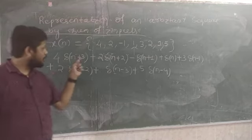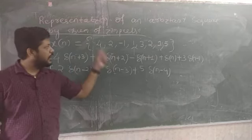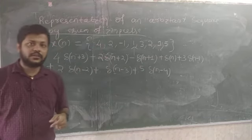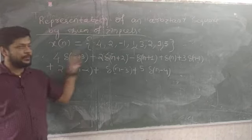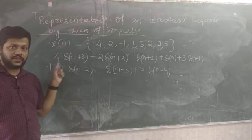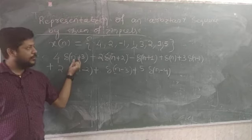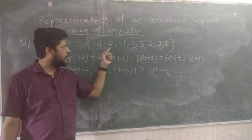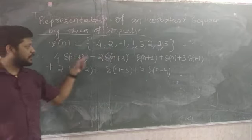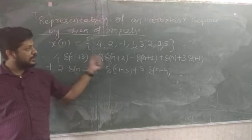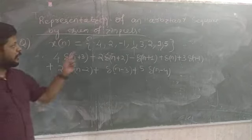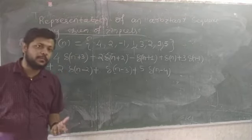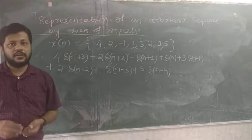The sequence has 8 samples total, so we need 8 impulses to represent it. For samples left of the origin at positions -1, -2, -3, we write δ(n+1), δ(n+2), δ(n+3) respectively inside the bracket. This is how any arbitrary sequence is represented by a sum of shifted impulses in discrete time.